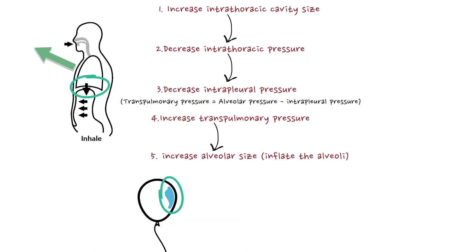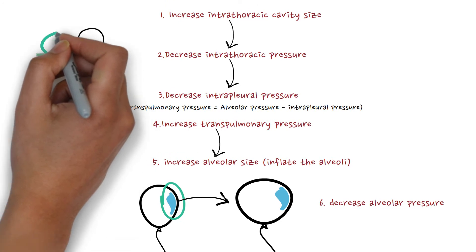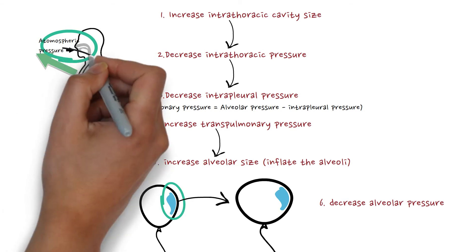There is no airflow at this moment — we're still in the process of trying to breathe in. There is a constant amount of gas, constant temperature, and the alveolar size has increased due to the increase in transpulmonary pressure. Based on Boyle's Law, the alveolar pressure will drop. When the alveolar pressure drops, we create a pressure gradient — alveolar pressure becomes less than the pressure at the mouth, which equals atmospheric pressure.